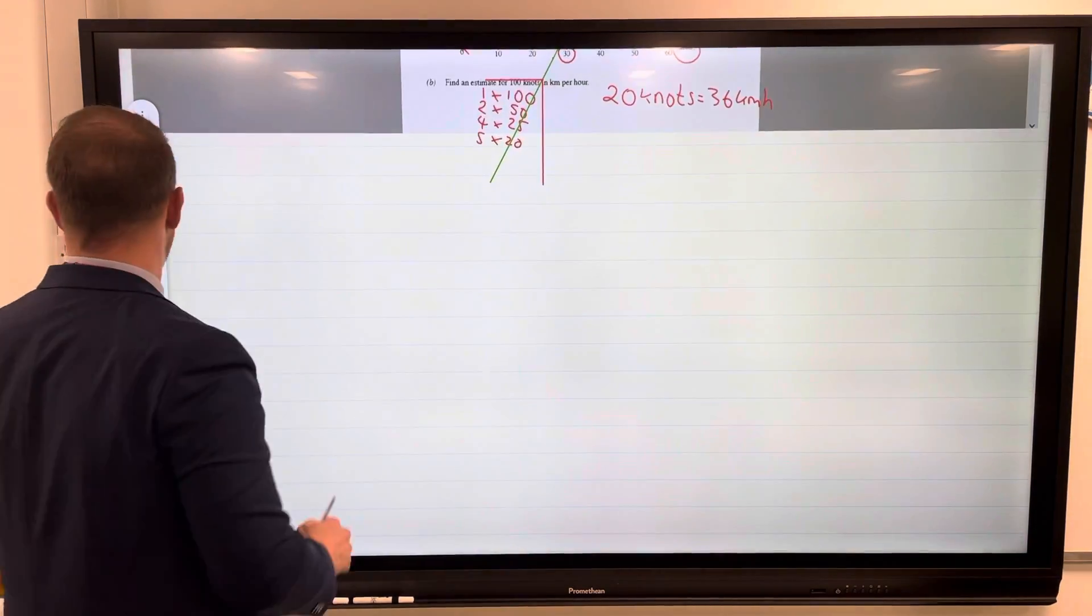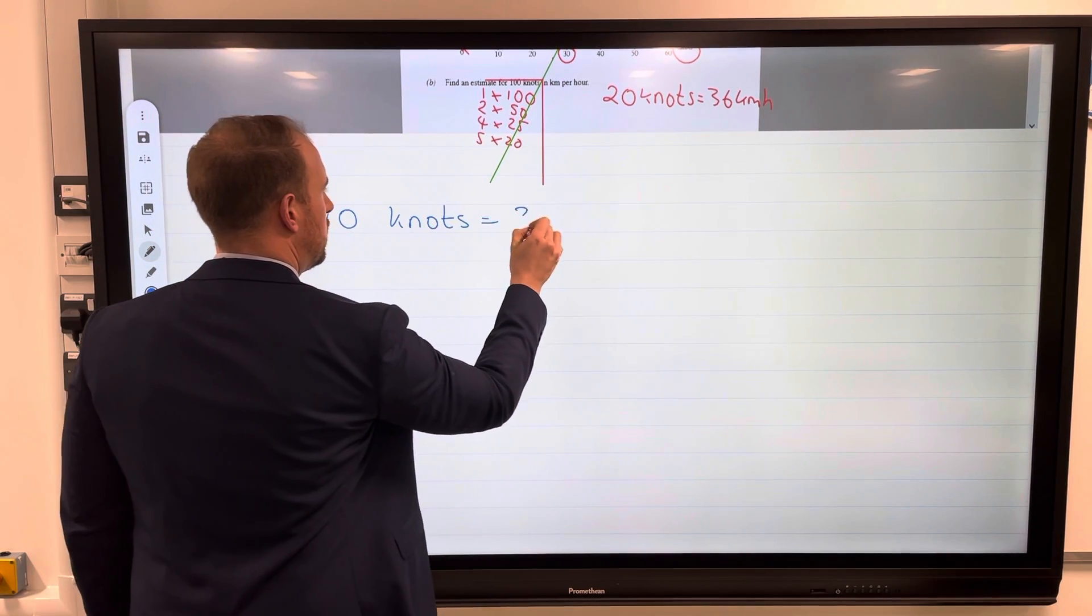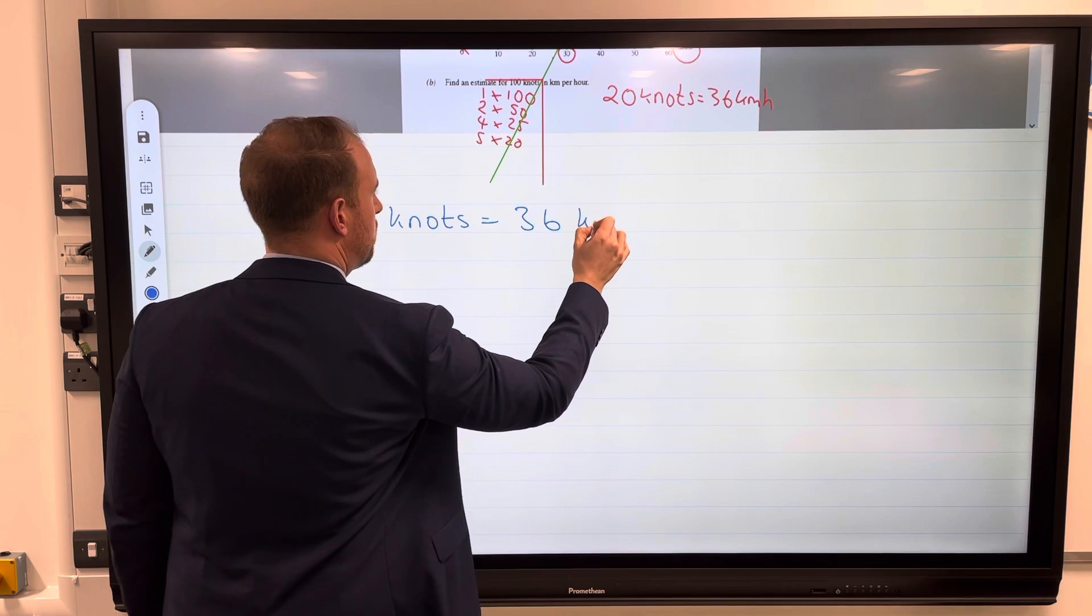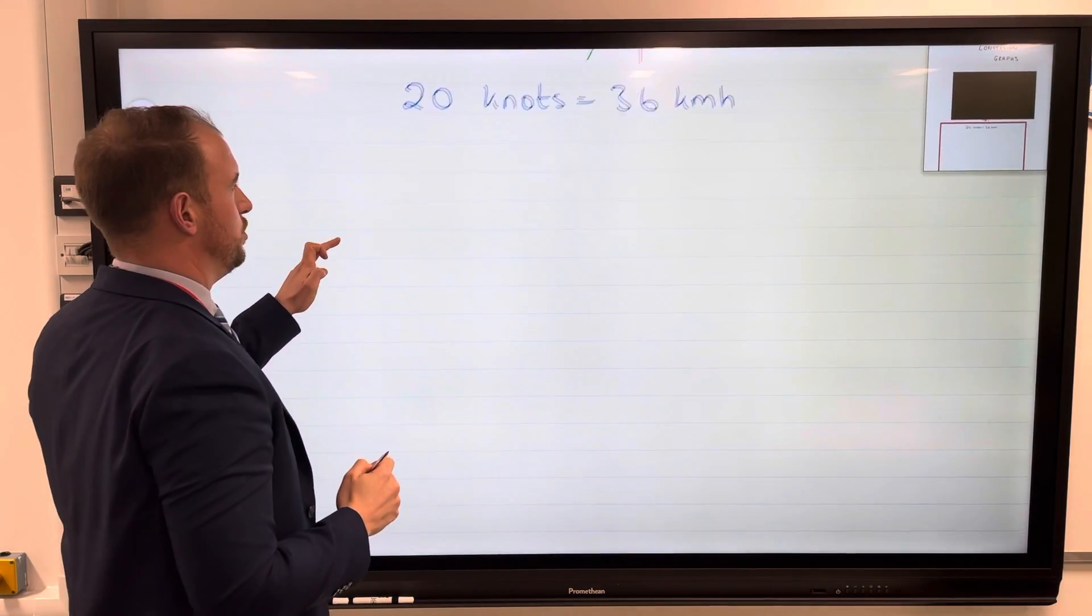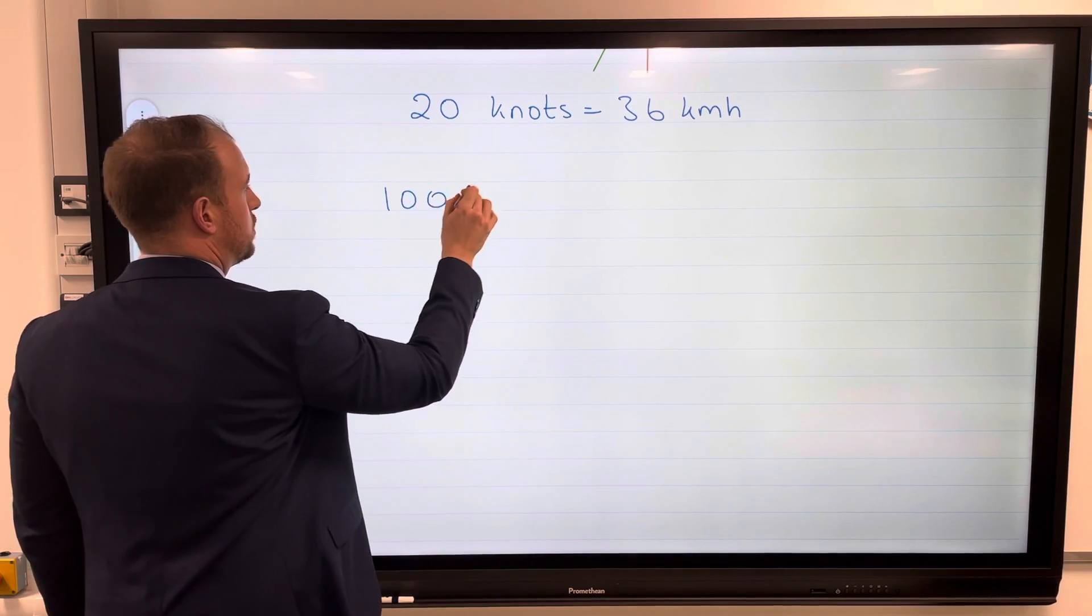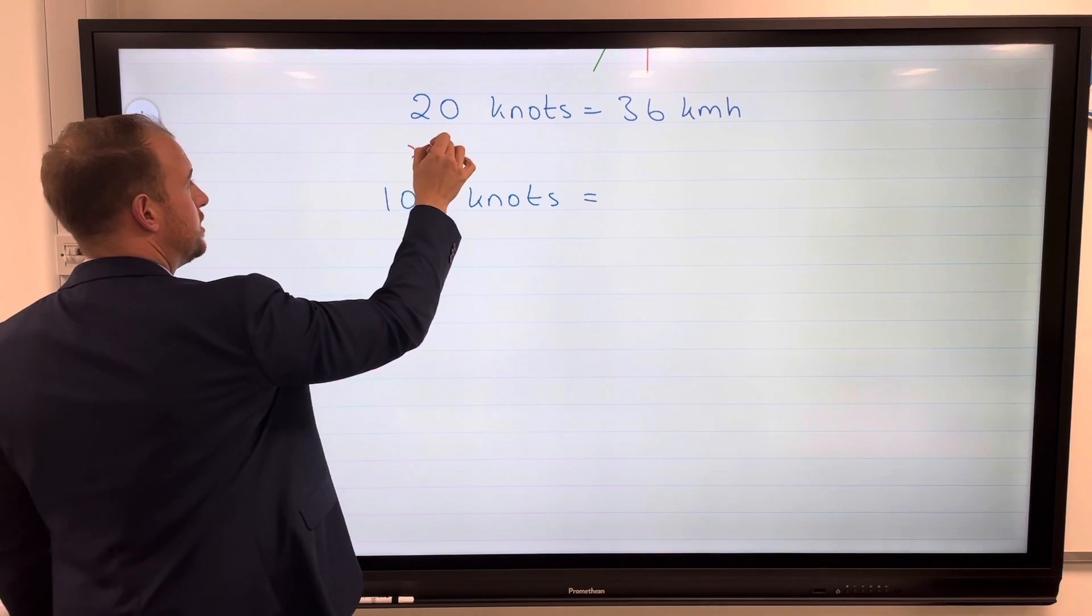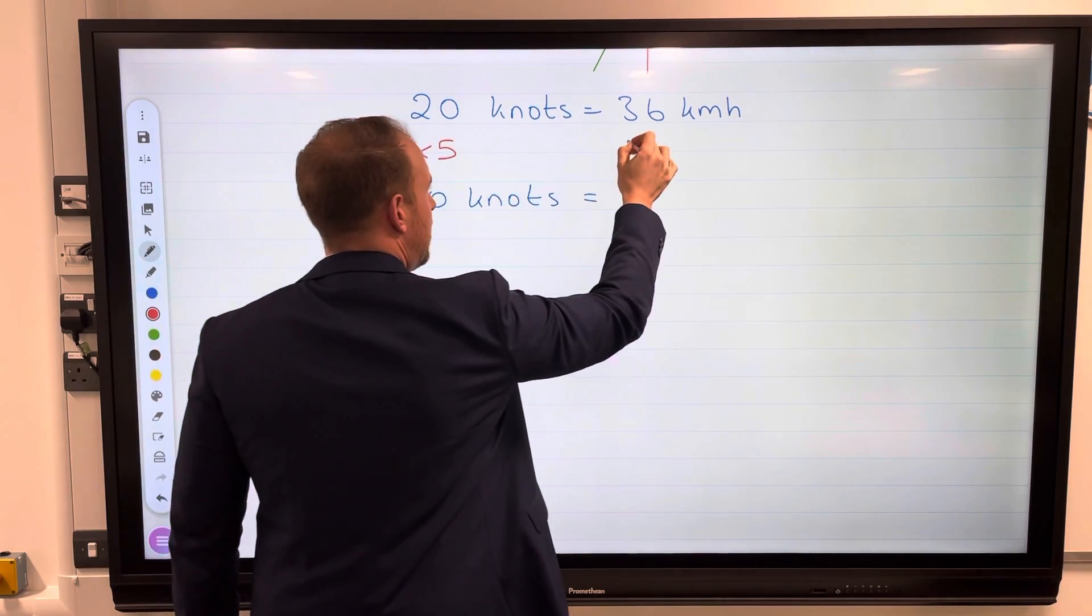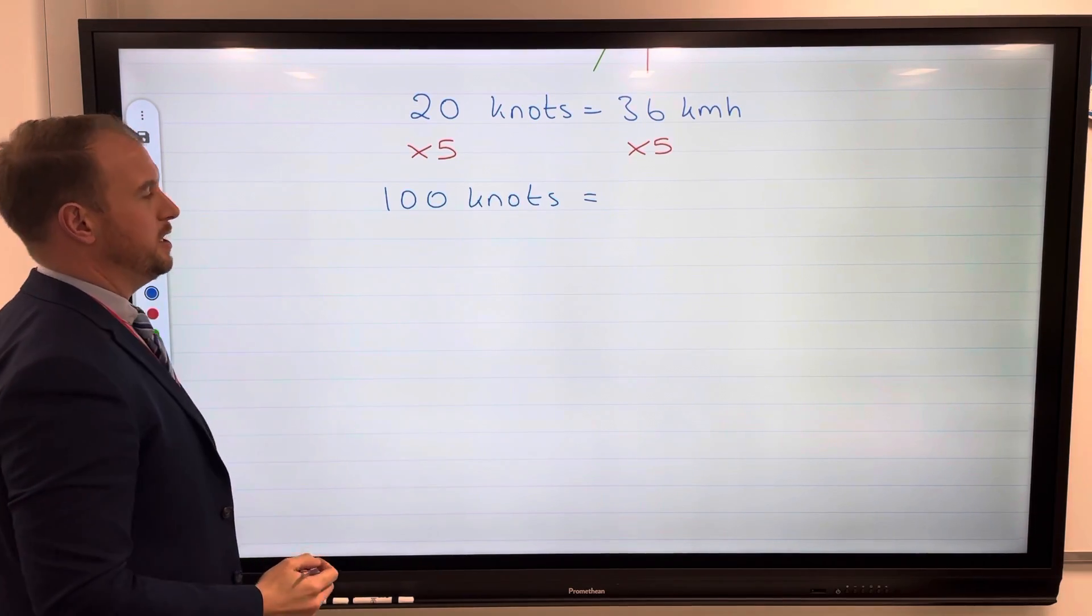We know 20 knots equals 36 kilometers per hour, but we need 100 knots. So to get to 100 knots we need to multiply this by 5.